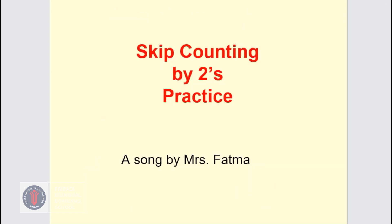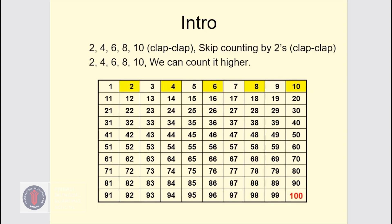We will practice counting by 2's with a song by Miss Fatma. Let's get started. After every 5 numbers, we do clap, clap, clap. Skip counting by 2's — clap, clap, clap. Let's do it together: 2, 4, 6, 8, 10. Clap, clap, clap. Skip counting by 2's — clap, clap, clap. 12, 14, 16, 18, 20. Clap, clap, clap. 22, 24, 26, 28, 30. Clap, clap, clap.